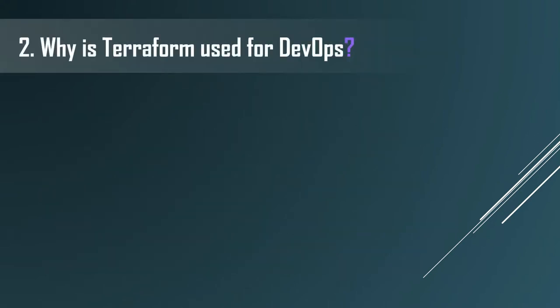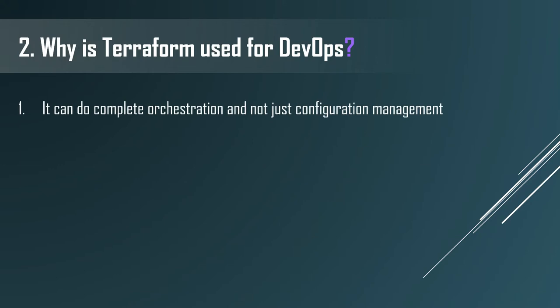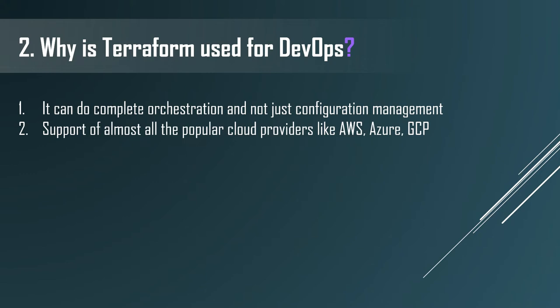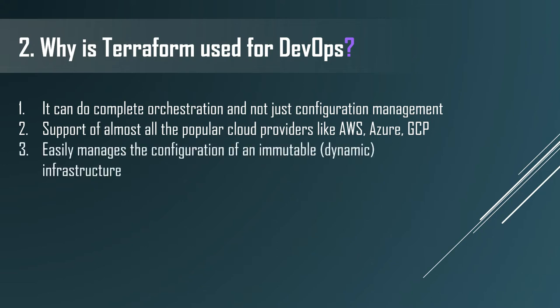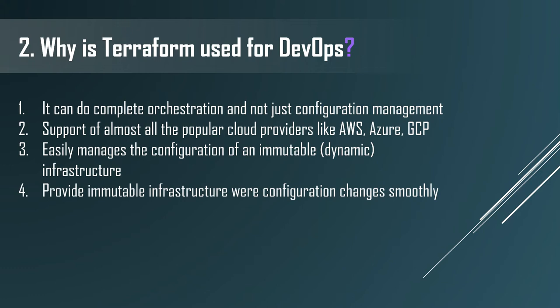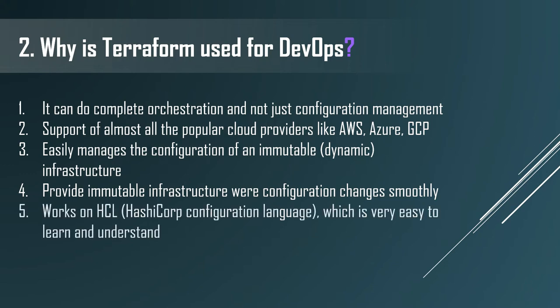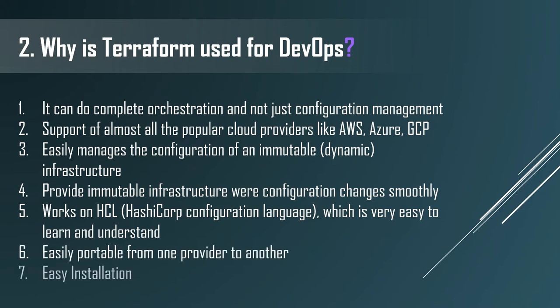The second question is: why use Terraform for DevOps? There are several reasons. The first one is it can do complete orchestration, and not just configuration management like tools Ansible and Puppet. It also has amazing support for almost all the popular cloud providers like Amazon Web Services, Azure Global Cloud Platform, etc. It can easily manage the configuration of immutable infrastructure, and because of this it can make configuration changes very smoothly. It is extremely easy to learn and understand, easily portable from one provider to another, and very easy to install on various OS like Linux, Windows, Mac, etc.